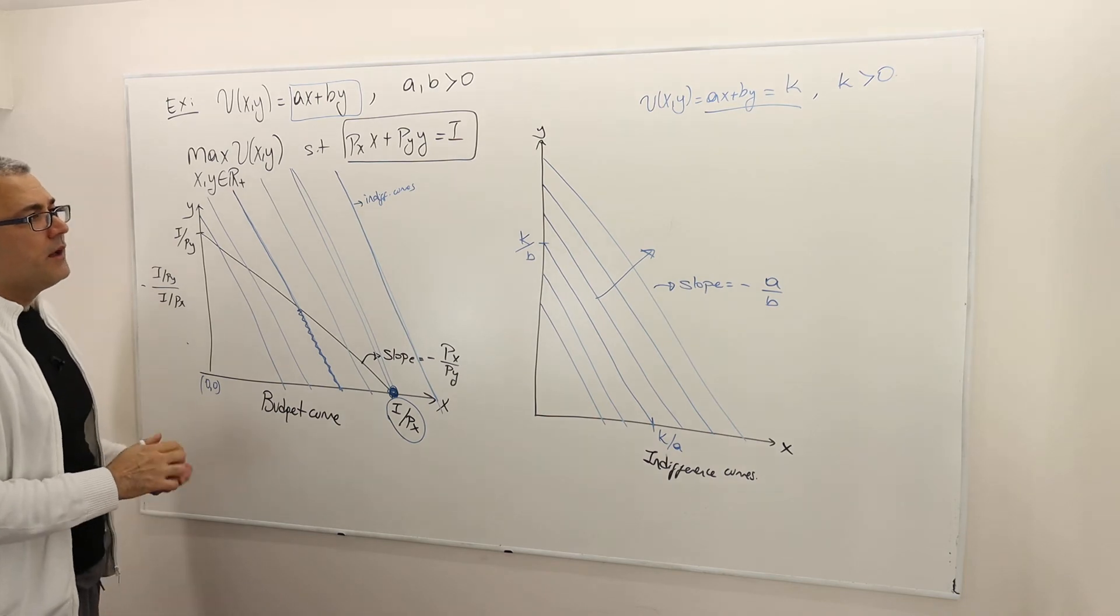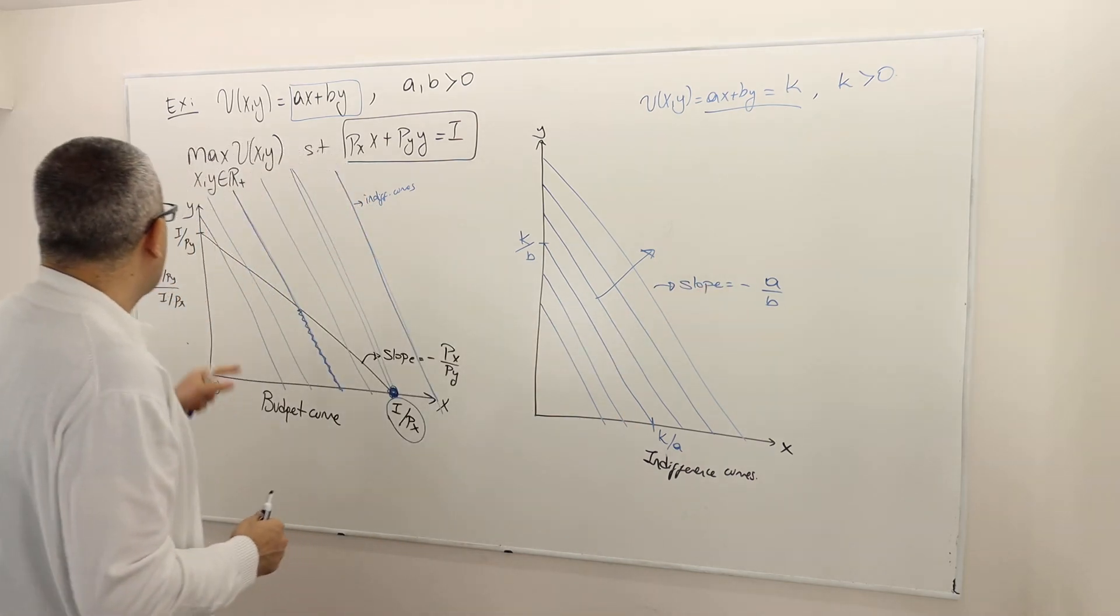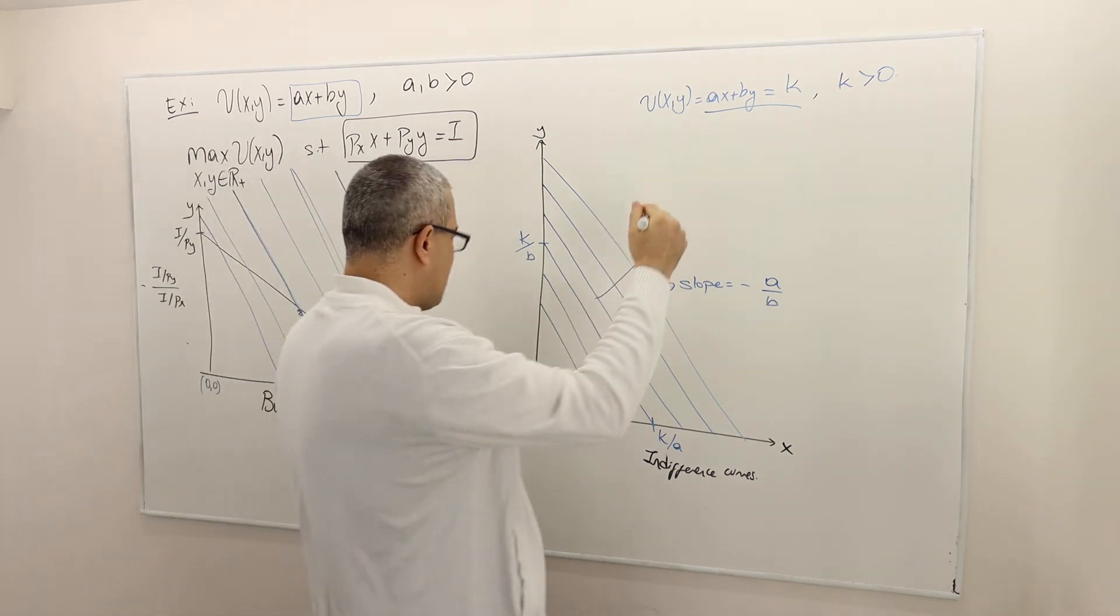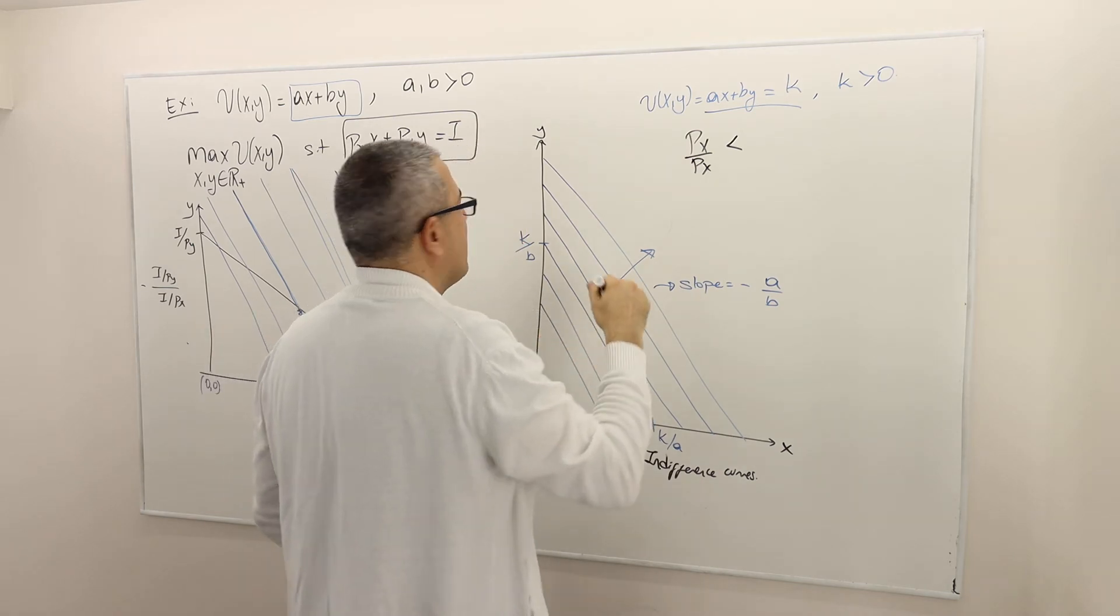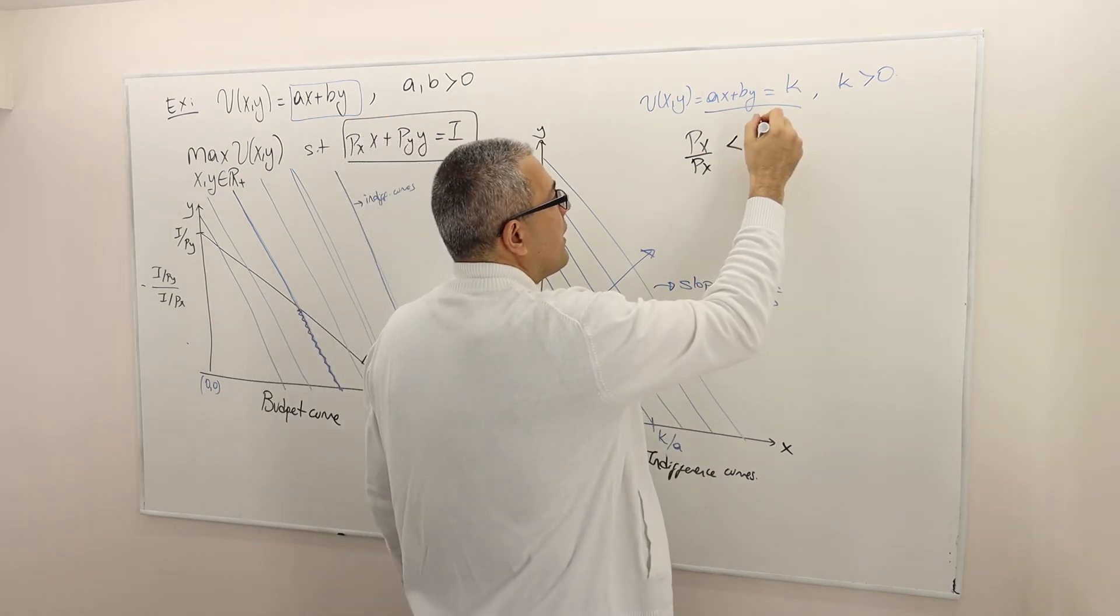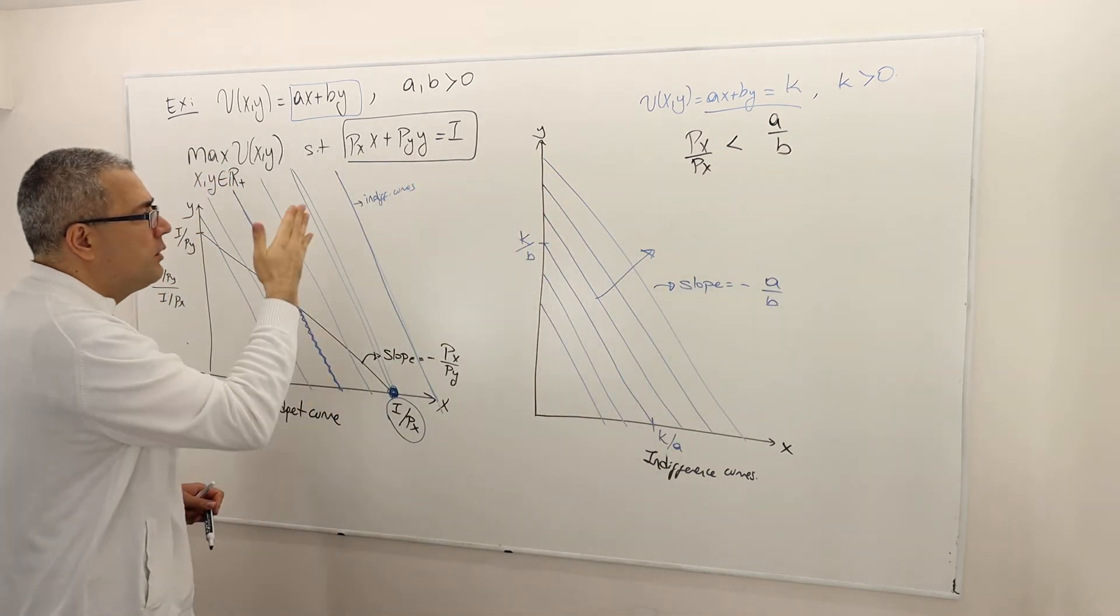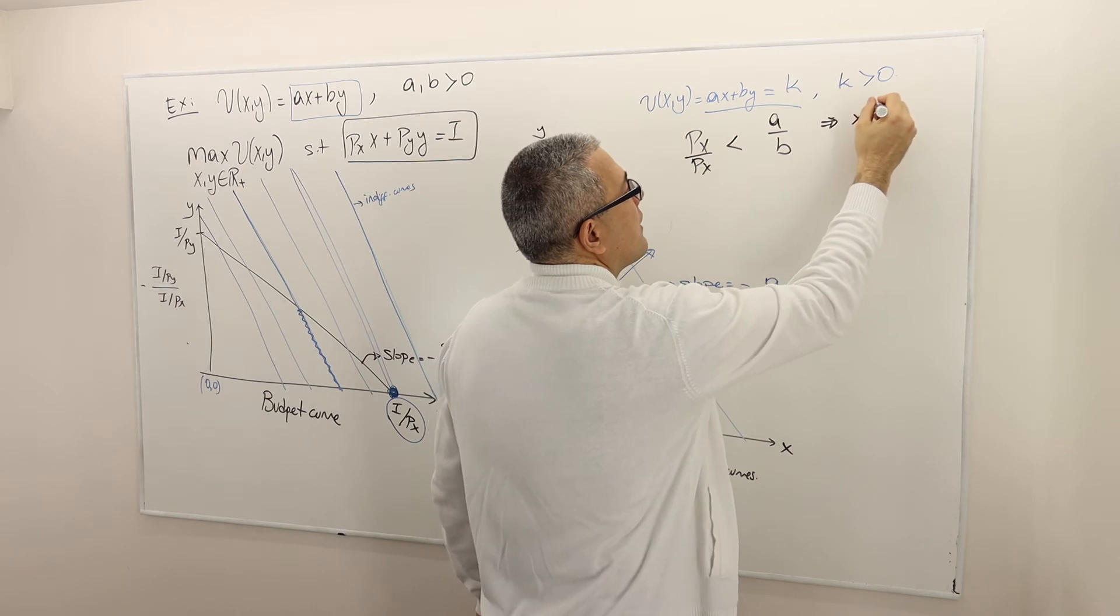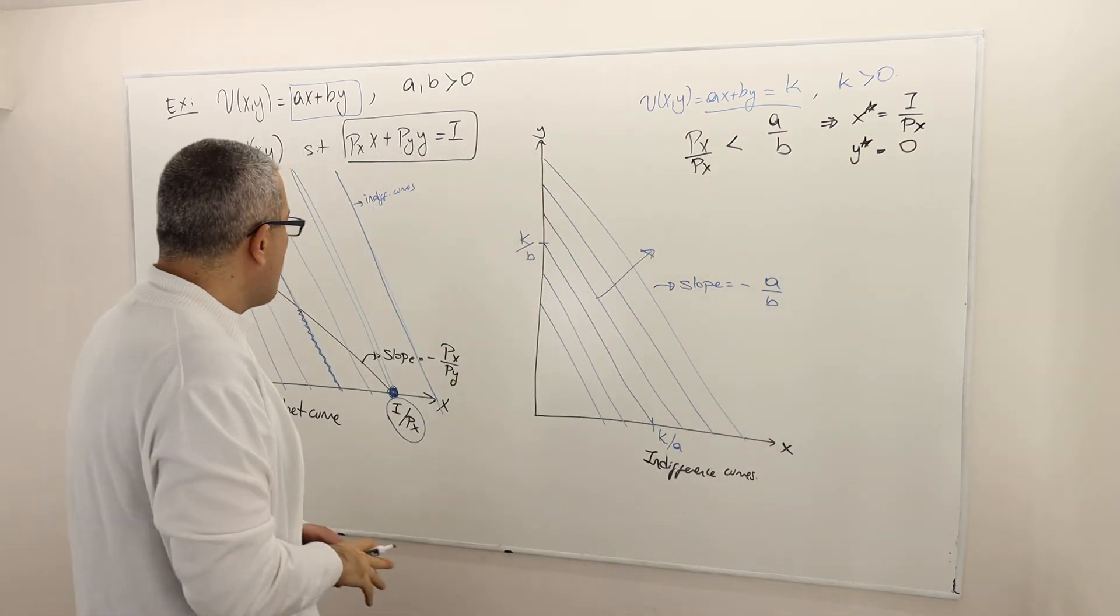However, the observation is very important. Be careful - I don't know the exact values of A and B and I and PX and PY. Here it was just a hunch. Suppose that my slope of the budget curve is less than the slope - the absolute values - of my indifference curves or marginal rate of substitution. If this is the case, that means the blue lines are steeper and hence the optimal solution must be X star equals income divided by PX and Y star is 0.